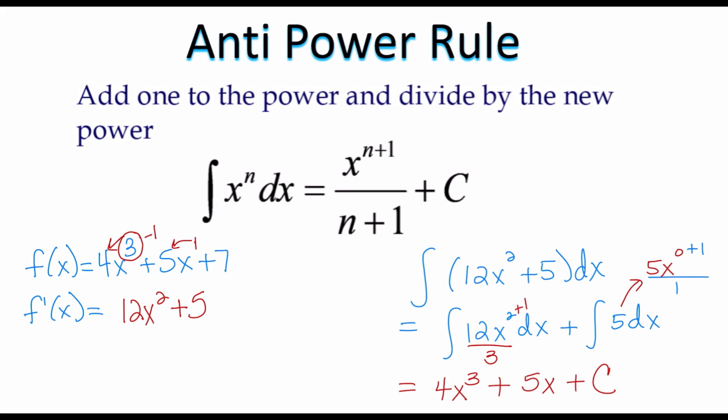So my original function is going to be 4x cubed plus 5x plus c. Notice, if I go back to my original problem, that's exactly what we get. The only thing I don't know is that the constant is equal to 7. In another video, I'll show you that sometimes they give you enough information so that you can determine that constant is 7.